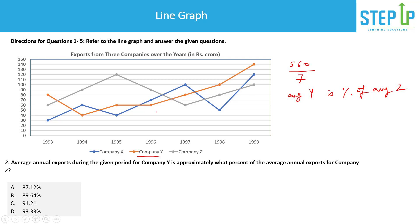Now for company Z — the gray line — its values are: 60 + 90 + 90 + 120 + 90 + 60 + 80 + 100 = 600 over 7 years. The key insight is that since we're comparing averages, dividing by 7 is common on both sides. So we only need to check what percentage 560 is of 600 — we can simply compute 56 as a percentage of 60.